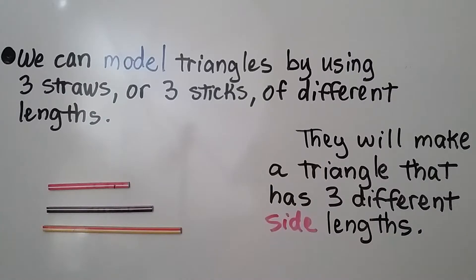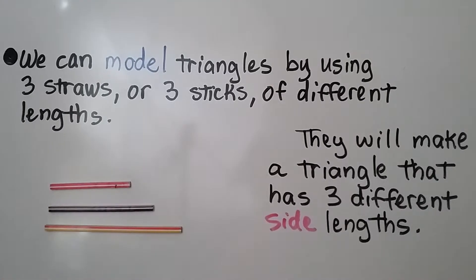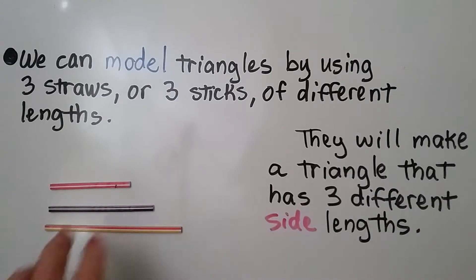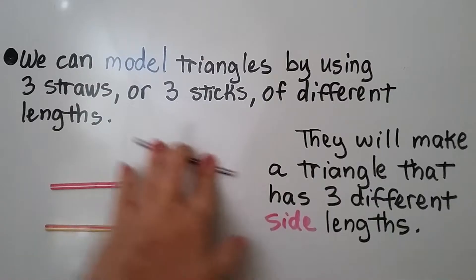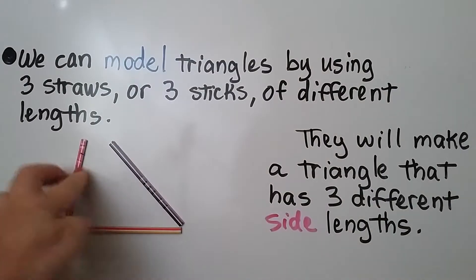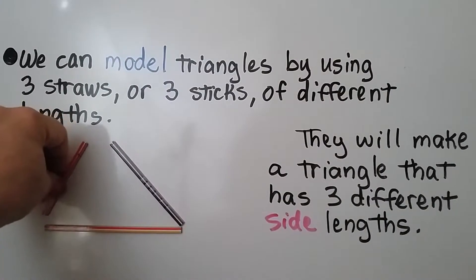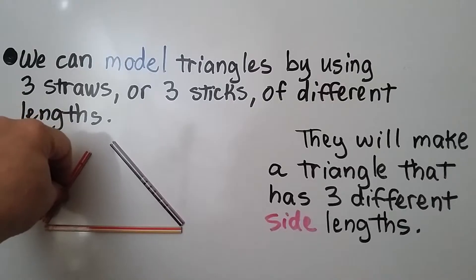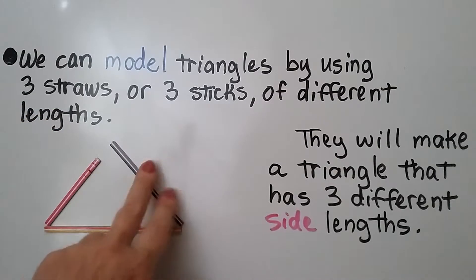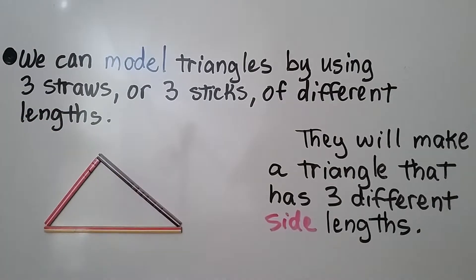We can model triangles by using three straws or three sticks of different lengths, and we'll make a triangle that has three different side lengths. We make them meet and we have a triangle with three different side lengths.